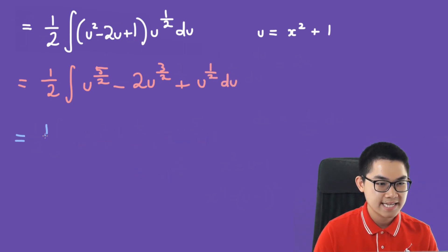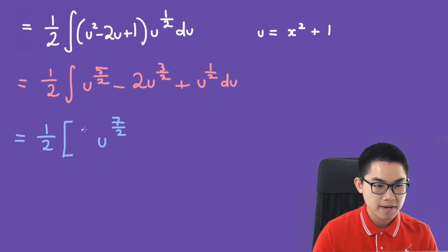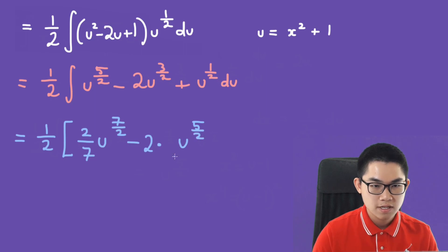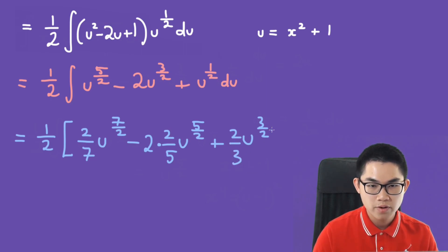Now we find the antiderivatives. The antiderivative of u to the 5/2 is u to the power of 7 over 2 divided by 7 over 2, which is the same as multiplying by 2 over 7. Minus 2 times u to the power of 5 over 2 divided by 5 over 2, which is multiplying by 2 over 5. Plus u to the power of 3 over 2 divided by 3 over 2, which is multiplying by 2 over 3.